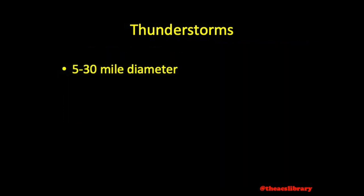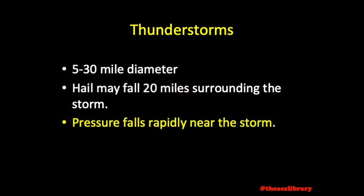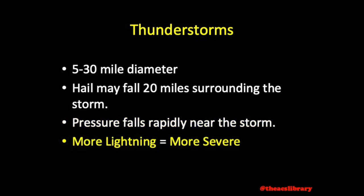Thunderstorms can range from 5 to 30 miles in diameter. Hail may fall for 20 miles surrounding the storm, especially under the anvil of a thunderstorm. Pressure typically falls rapidly with the approach of a thunderstorm. In terms of lightning, the more frequent the lightning, the more severe the thunderstorm. Decreasing frequency may signal dissipation.